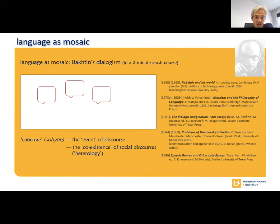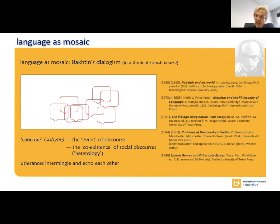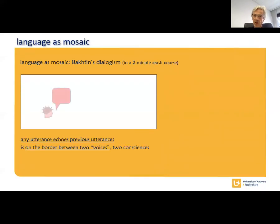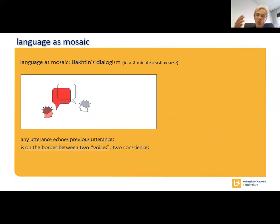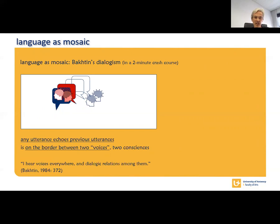An utterance always exists together with other utterances within the variety of social discourses — that is what Bakhtin calls heterology. That co-existence literally is togetherness: utterances or texts intermingle, echo each other, reuse previous utterances, and in turn are reused in other new utterances. Because new utterances always echo existing utterances or texts that can be incorporated, changed, parodied, adapted, or also ignored — which is a way of reacting to them as well — language always is togetherness. It always implies the other's voice. Any utterance or text, therefore, is on the border of at least two voices, two consciences: one being the creative one, the other one being echoed, being reused.